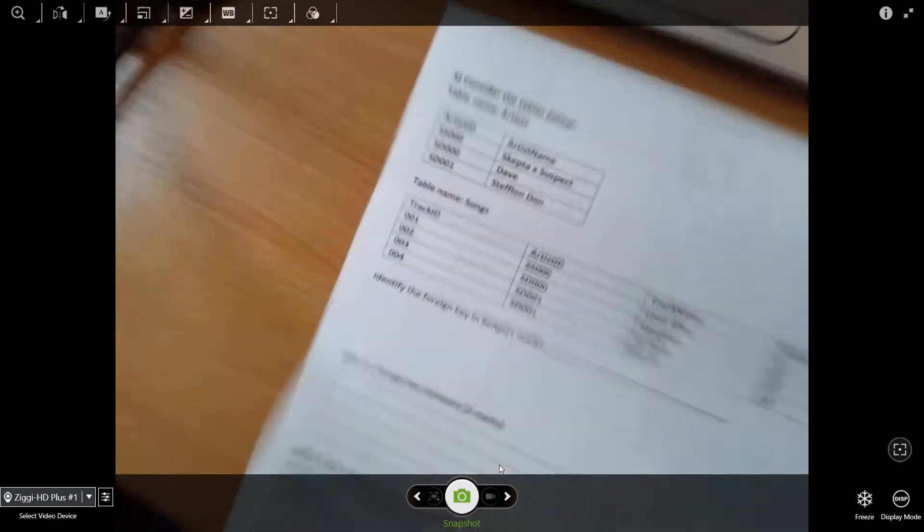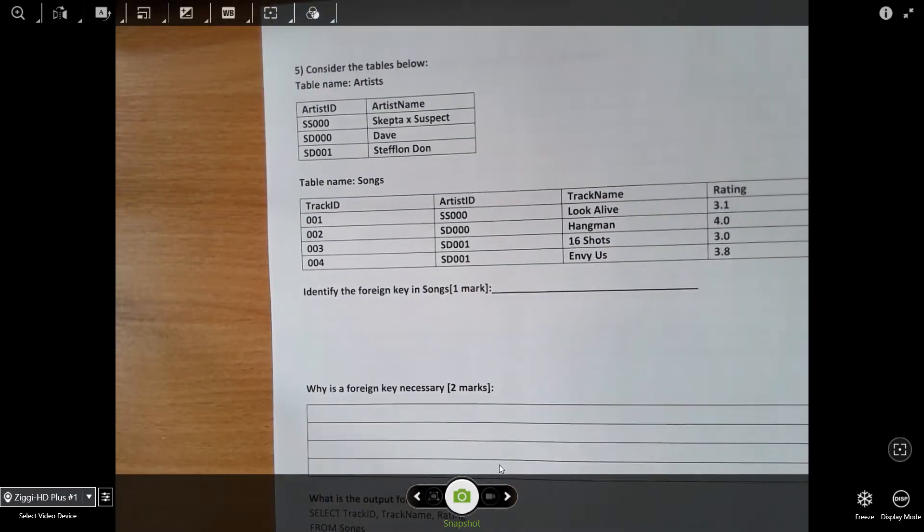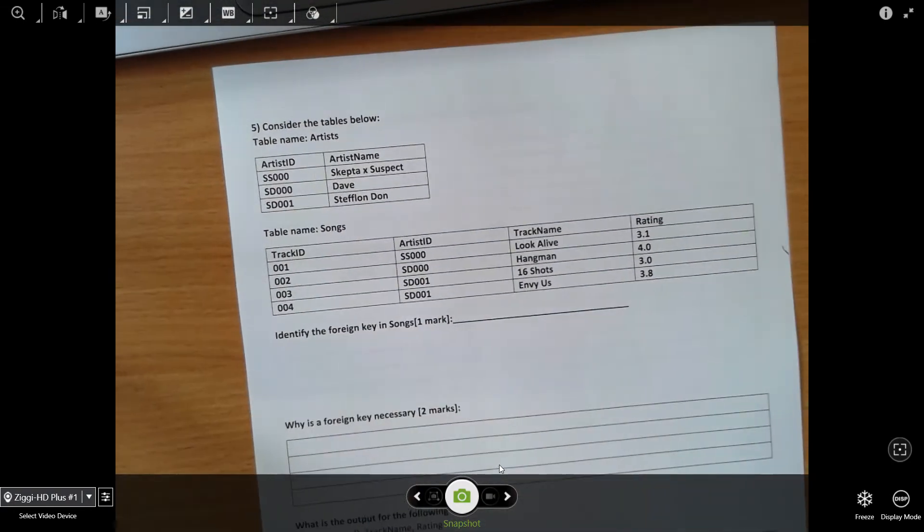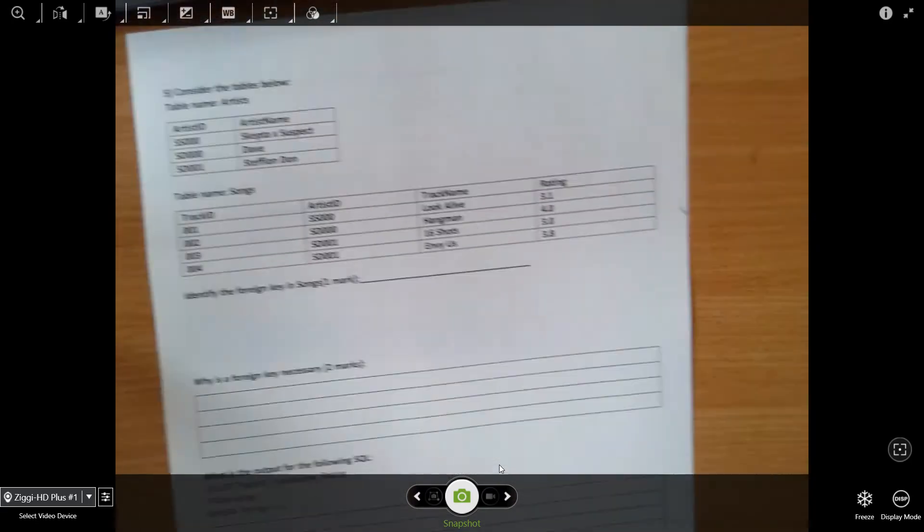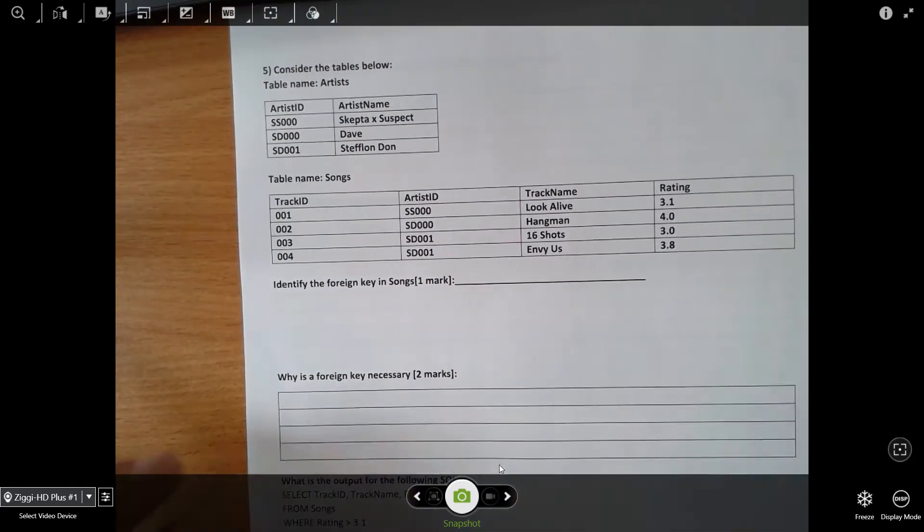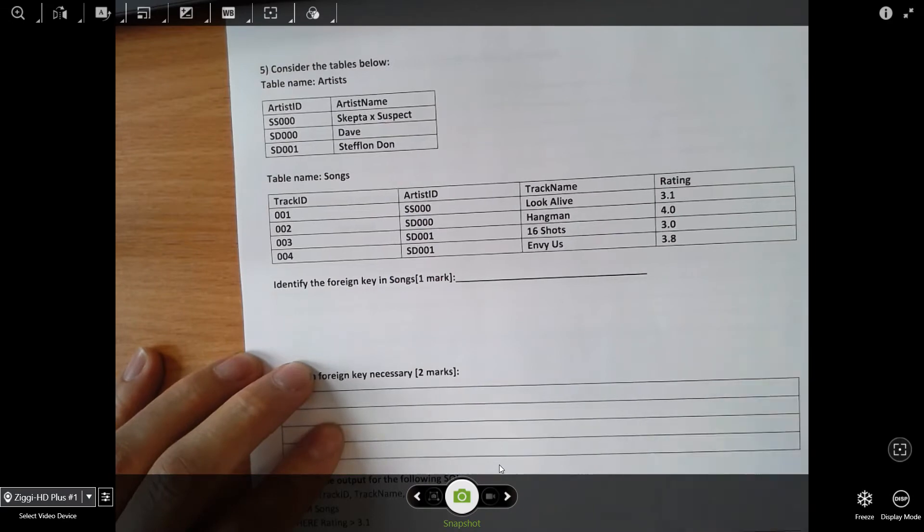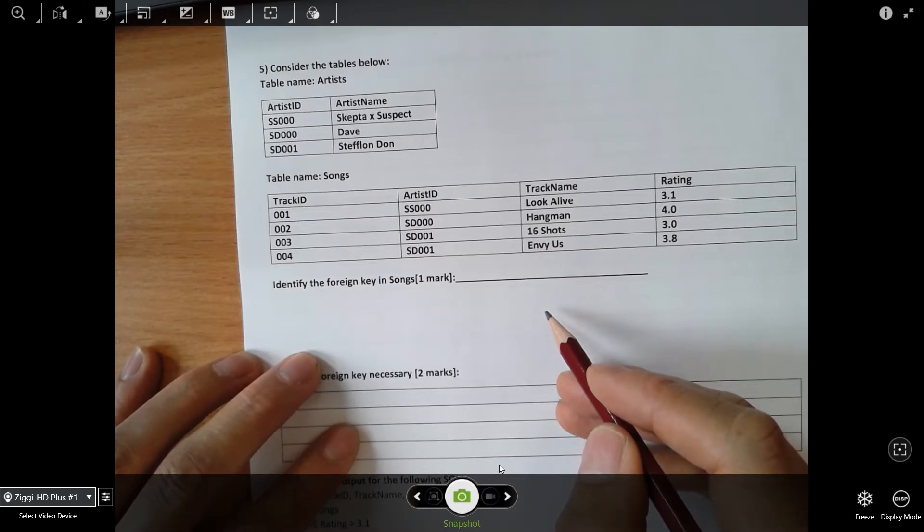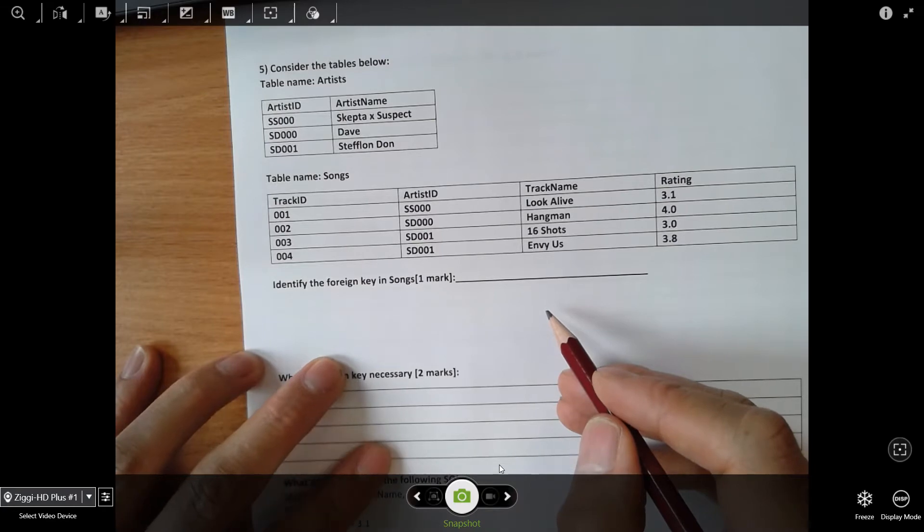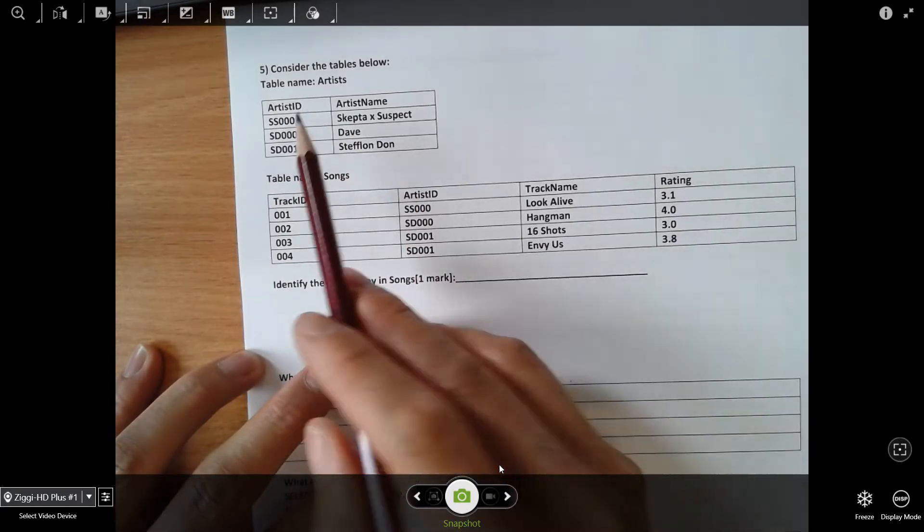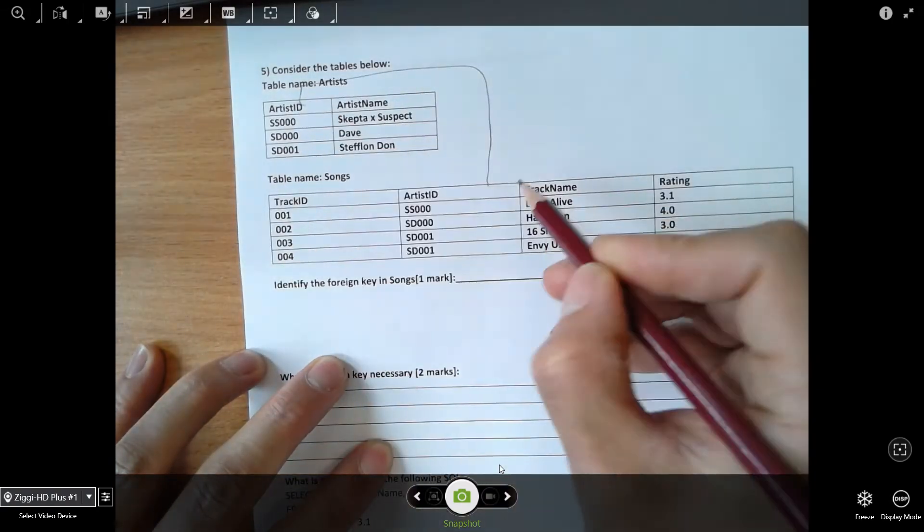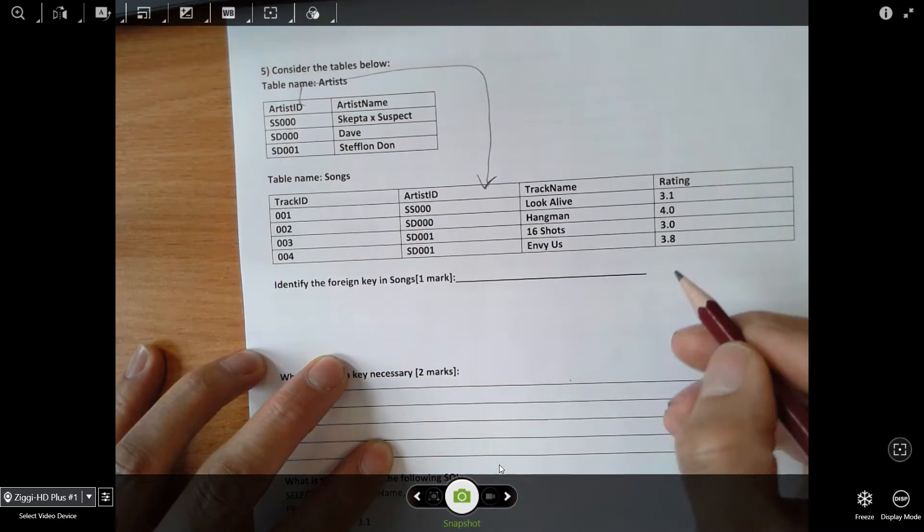What we have here, we're looking at a couple of tables actually, and we're being asked to identify the foreign key in songs. Now, a foreign key is generally a primary key in another table. In our artist table, we can see that the primary key is artist ID, so this is a foreign key - artist ID.